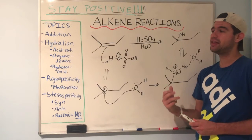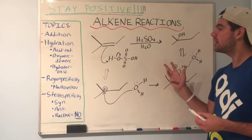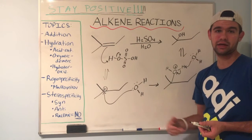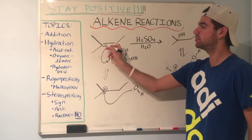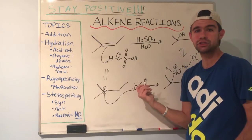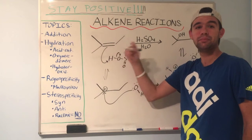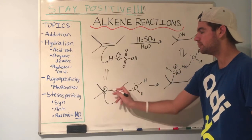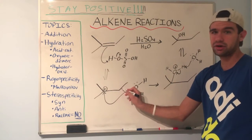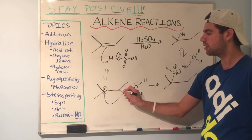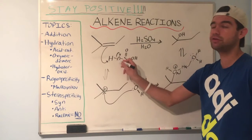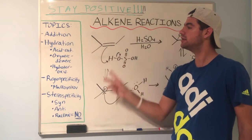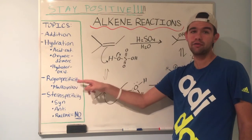Markovnikov's rule basically states that in electrophilic addition, which is what this is, the electrophile will attack so that you end up with the most stable carbocation. So which carbon should be protonated? The one with more hydrogens — because the more substituted carbon is preferred for carbocation placement. We don't want a carbocation on the secondary carbon; tertiary is much more favored. So this carbon gets the proton. Acid-catalyzed hydration of alkenes is regiospecific and follows Markovnikov's rule.